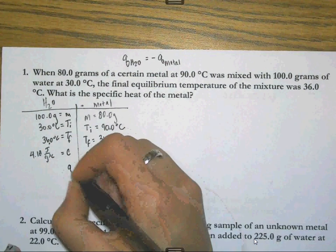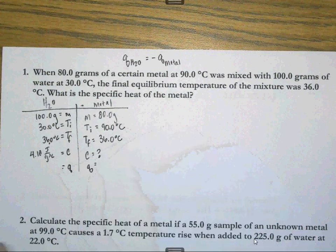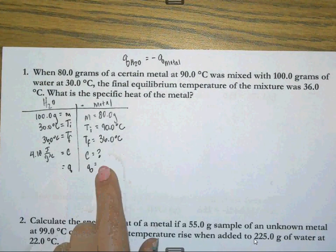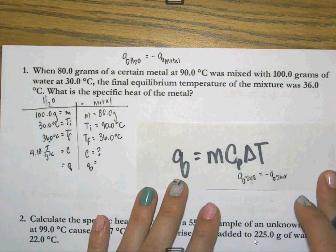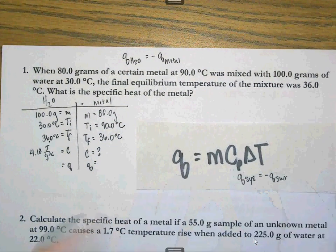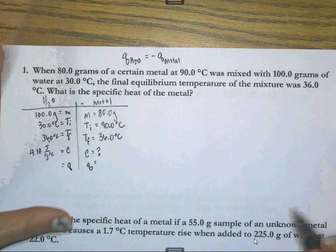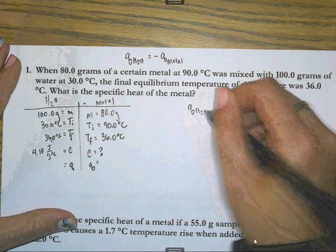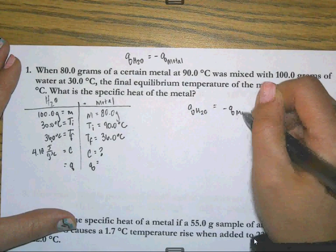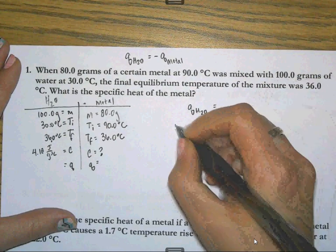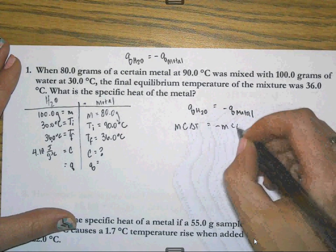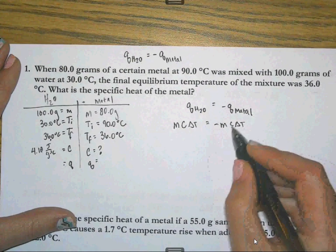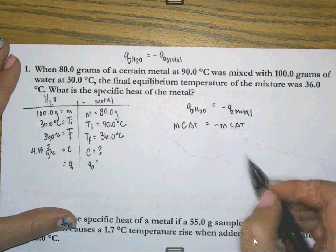And that leaves me with the only thing that I don't know for the water is the Q. And I have two things over here I don't know. I cannot just take this piece right here and plug it into my Q is equal to MC delta T formula because I don't have C and I don't have Q. I'm going to have to have everything but one. But what I can do is I can acknowledge that the Q of the water is the negative Q of the metal. And then I can substitute the formula that makes this MC delta T equal to negative MC delta T. Well, I have all of those things except the C. And if I set it up this way, I can solve for C.